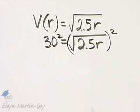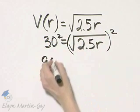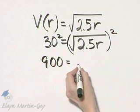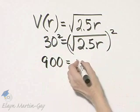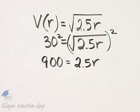30 squared, that's 30 times 30, or 900, is equal to the square root of 2.5r squared is 2.5r.